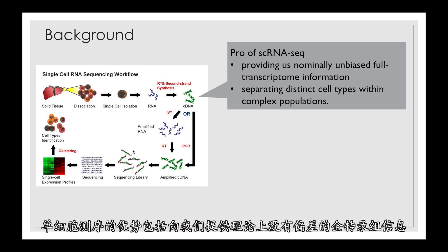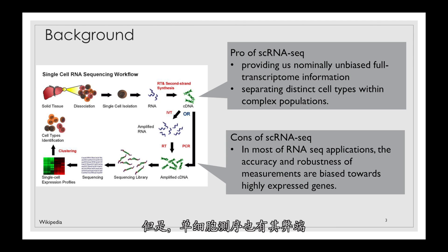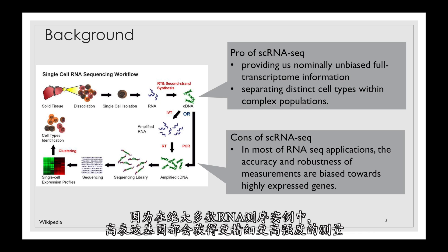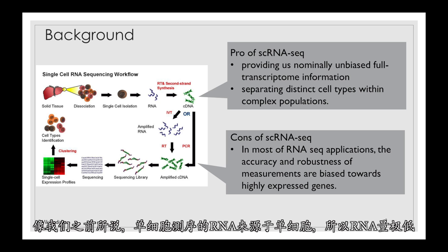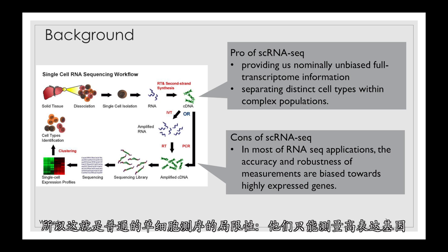The advantages of single cell sequencing include providing nominally unbiased full transcriptome information and separating distinct cell types within complex populations. However, there are also limitations. In most RNA applications, the accuracy and robustness of measurements are biased toward highly expressed genes. Because RNA is obtained from individual cells, the amount of RNA is very low, making it highly possible that only highly expressed genes can be amplified. This is the key limitation of general single cell RNA sequencing.